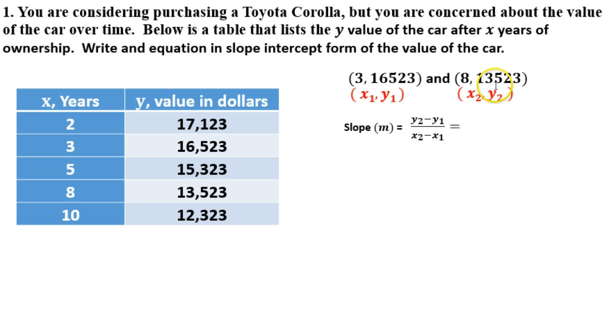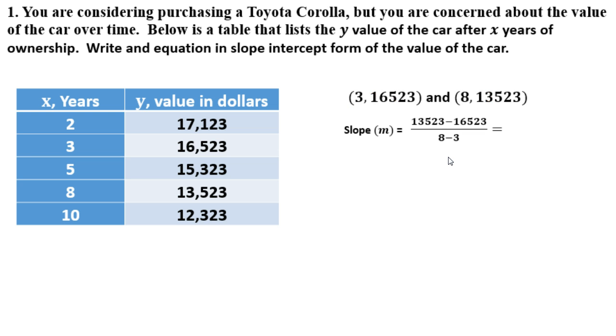Let's see, y2 minus y1. So I've got 13,523 minus 16,523. That was my y2. Now my y1 is 16,523. Now that I've got those, I can use my x2, which is 8, minus x1, which is 3: 8 minus 3.